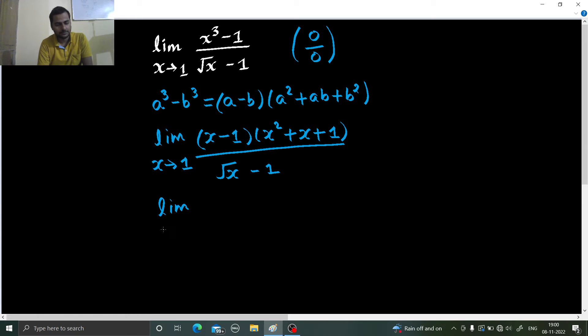So limit x tending to 1, under root x minus 1 multiplied by under root x plus 1, x square plus x plus 1, divided by under root x minus 1.